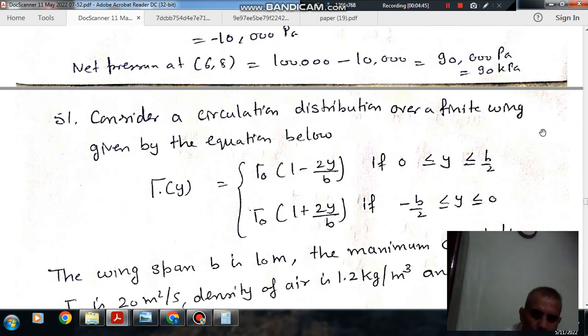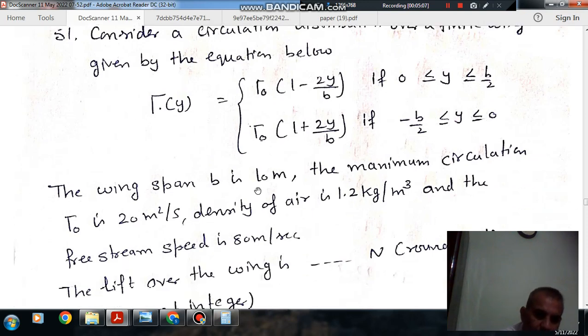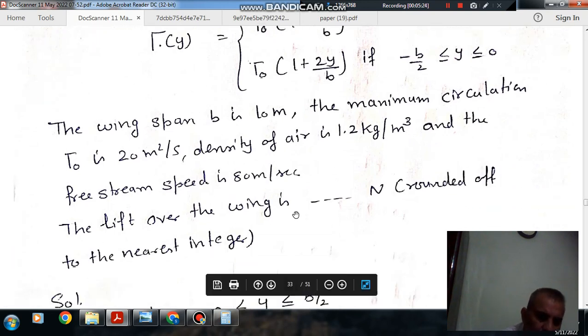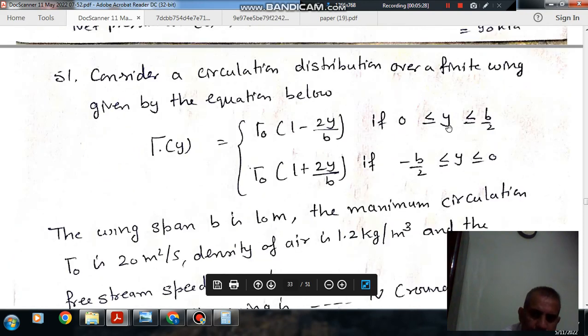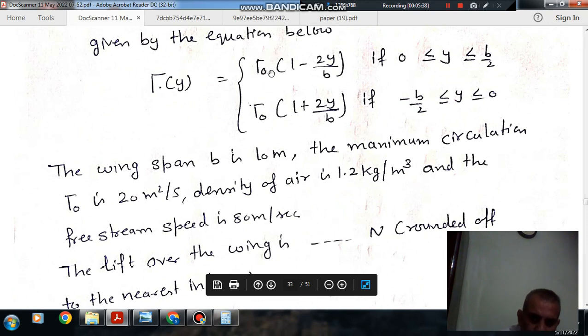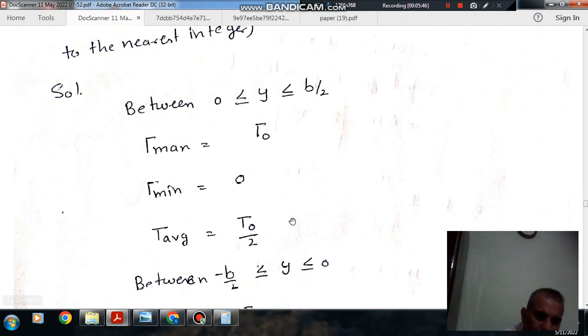Next, consider a circulation distribution over a finite wing given by the equation: Γ(y) equals Γ₀(1 minus 2y/B) if y varies from 0 to B/2. The wing span B is 10 meters, maximum circulation Γ₀ is 20 m²/s, density of air is 1.2 kg/m³, and speed is 80 m/s. Find the lift over the wing. The variation of circulation is linear with maximum Γ₀ and minimum zero.